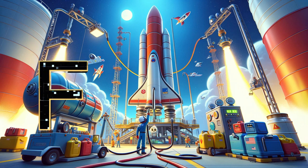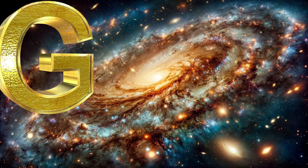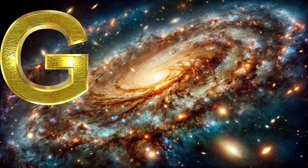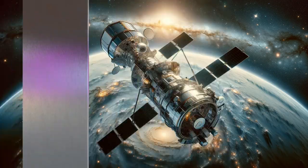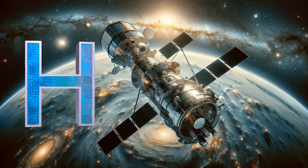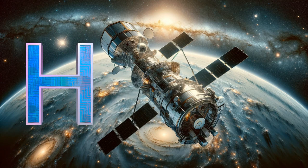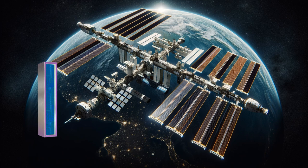G is for galaxy, far and wide. H is for Hubble, a telescope with pride. I is for ISS, where astronauts stay.